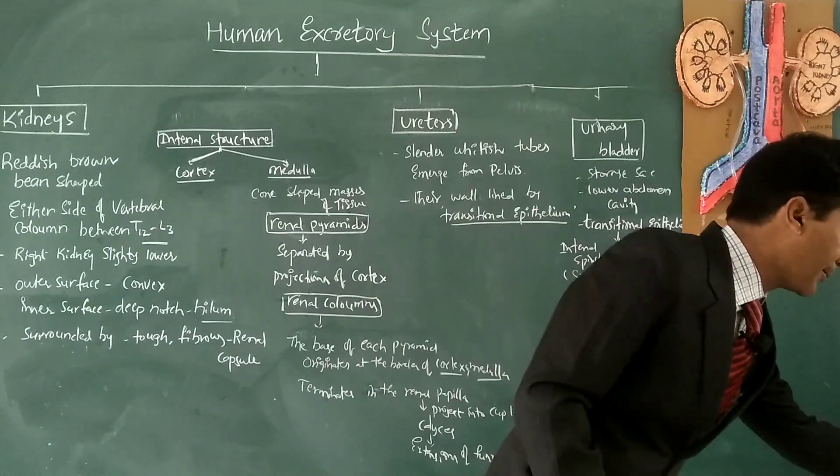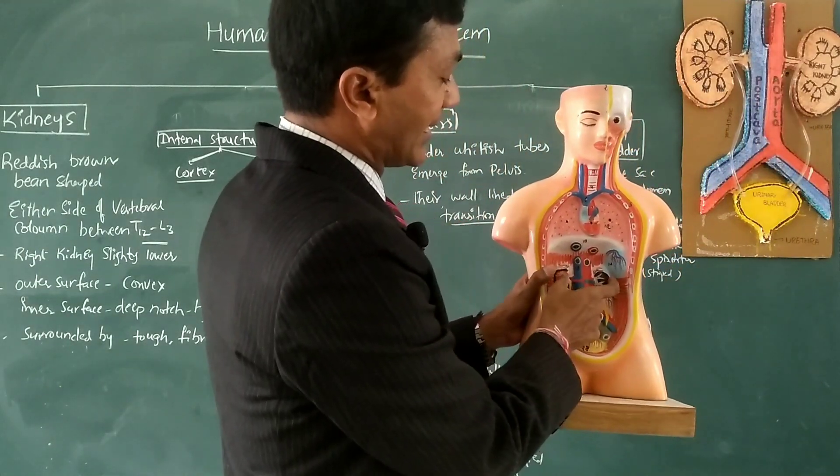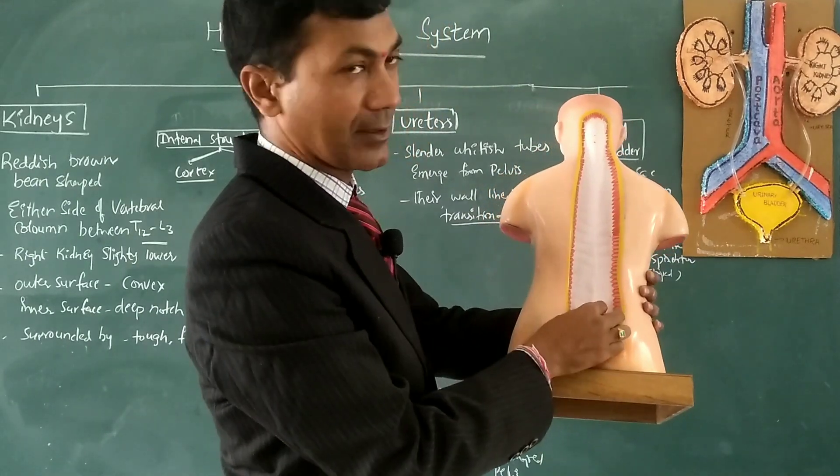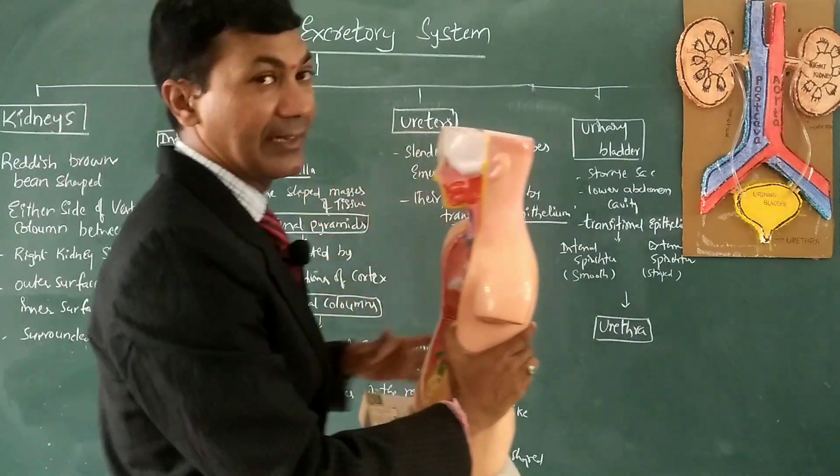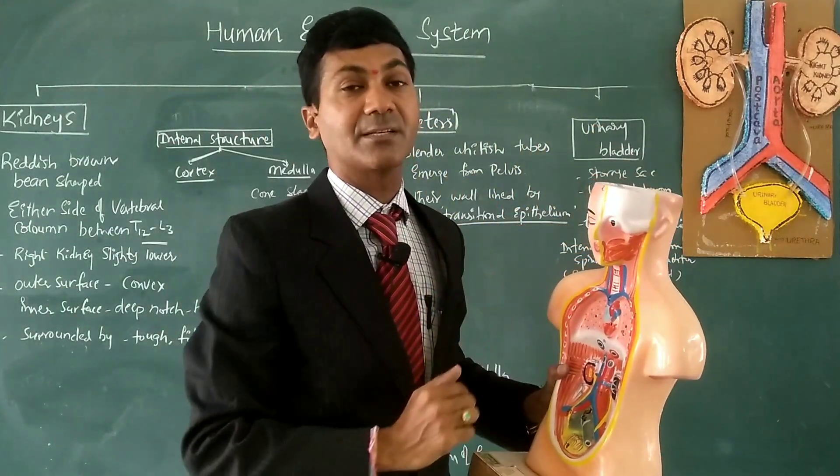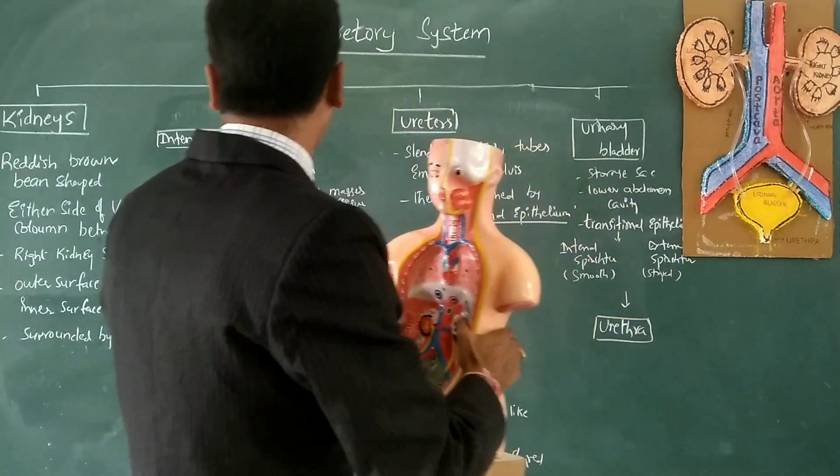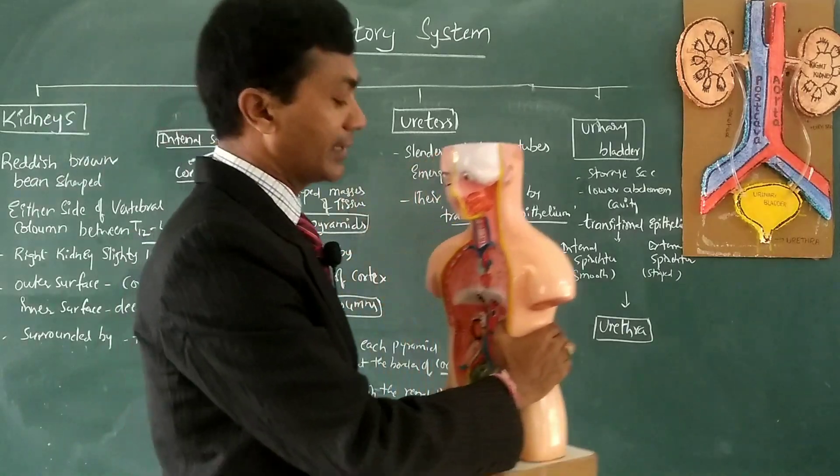Now I will show you. This is the dorsal wall attached to either side of the vertebral column. You can see the kidneys are located exactly between T12 and L3. An interesting thing in humans is that the right kidney is slightly lower than the left kidney.